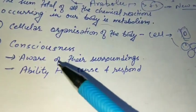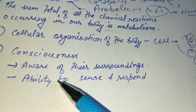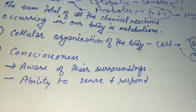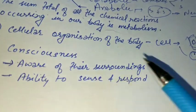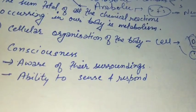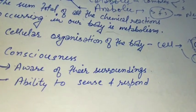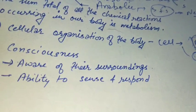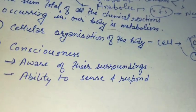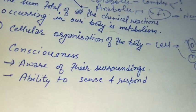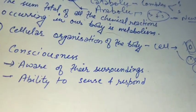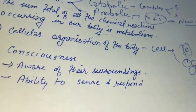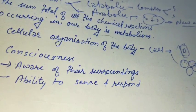The next and last characteristic is consciousness, which is the defining property of living organisms. Consciousness means being aware of one's surroundings and having the ability to sense and respond to external stimuli. It is the ability to sense the environment and also to respond to those environmental stimuli. The stimuli may be physical, chemical, or biological, and we sense these stimuli through our sense organs like skin, eyes, nose, and tongue.